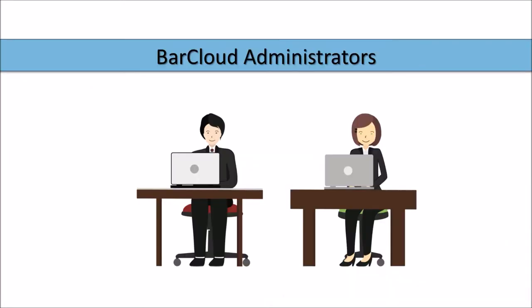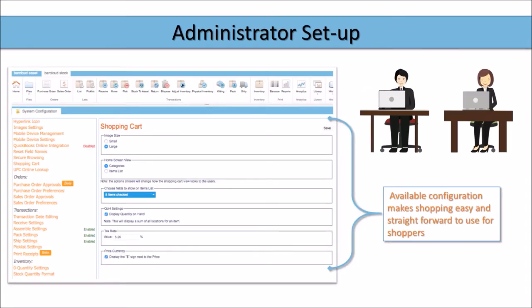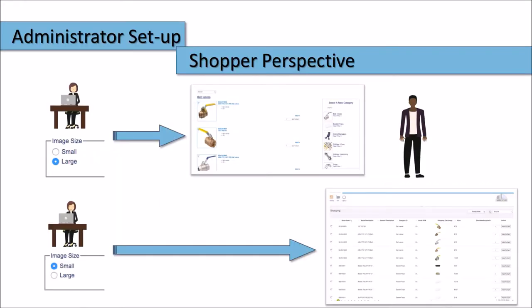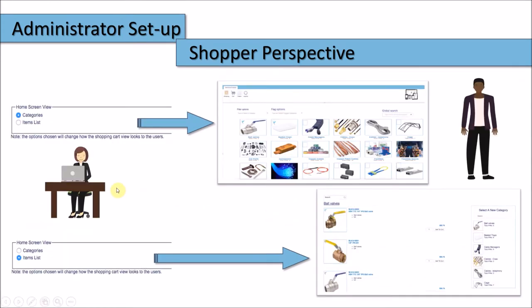The BarCloud administrators are the ones responsible for setup and configuration. They have a wide variety of configuration options that allows them to set the shopping cart up for their specific purposes. The administrator's control over things as simple as the image size will affect the perspective of the shoppers. The home screen can be configured to automatically use the categories or the item list view.